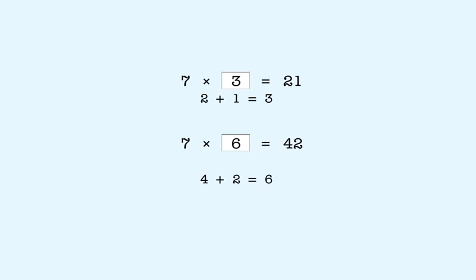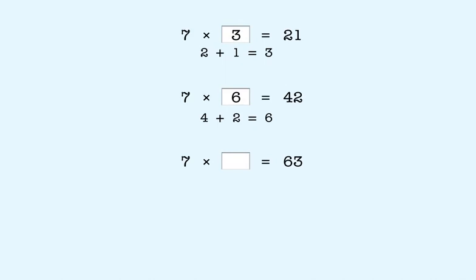Here's another one. In this example, the product is 63. If we add the digits in 63, we get 9. That means the missing factor is 9.